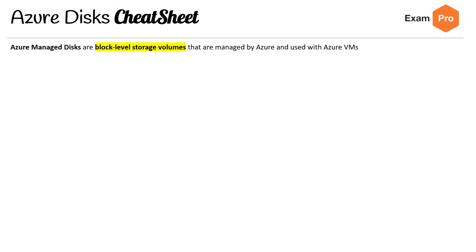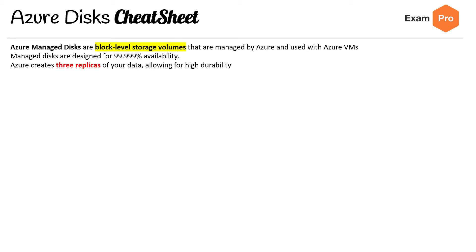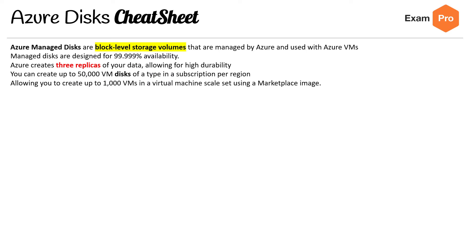Azure managed disks are block-level storage volumes managed by Azure and used within Azure VMs. Managed disks are designed for 99.999% availability — that's three nines. Azure creates three replicas of your data for high durability. You can create up to 50,000 VM disks of a type per subscription per region, allowing you to create up to 1,000 VMs in a virtual machine set using a marketplace image. Managed disks are integrated with availability sets.